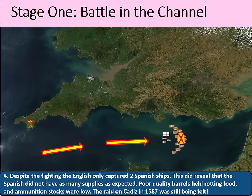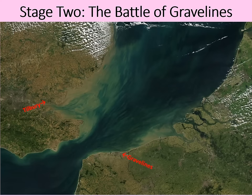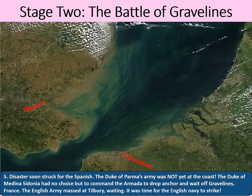Nevertheless, the Armada continued to sail up the Channel and did eventually arrive off Calais, where it could drop anchor and wait for the Duke of Parma's army. Disaster soon struck for the Spanish, though — the Duke of Parma's army was not yet at the coast. The Duke of Medina Sidonia had no choice but to command the Armada to drop anchor and wait off Gravelines, France. The English army massed at Tilbury, waiting.